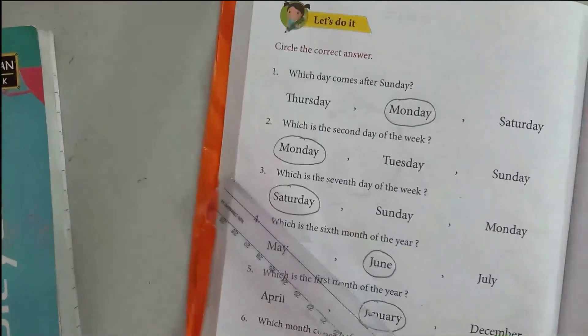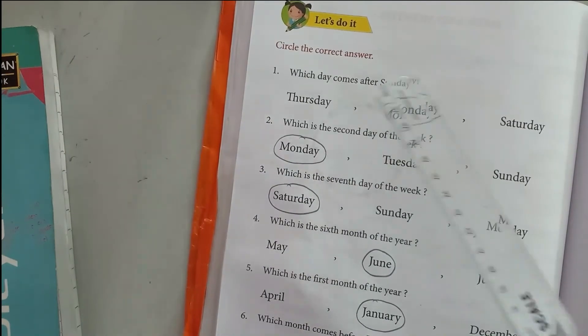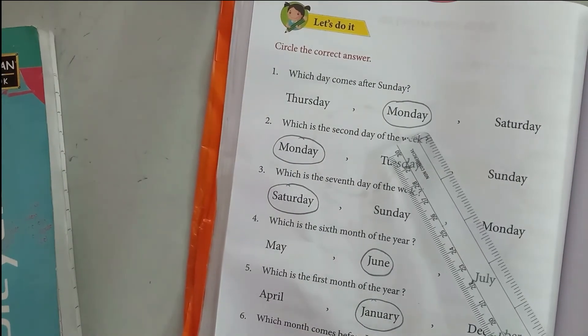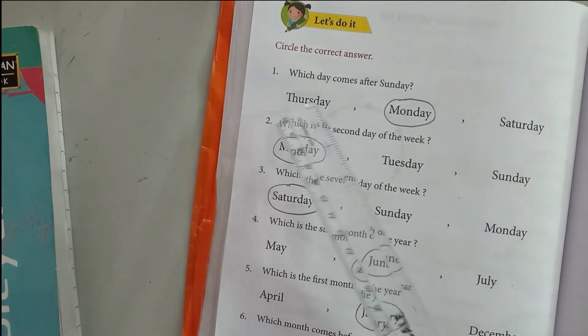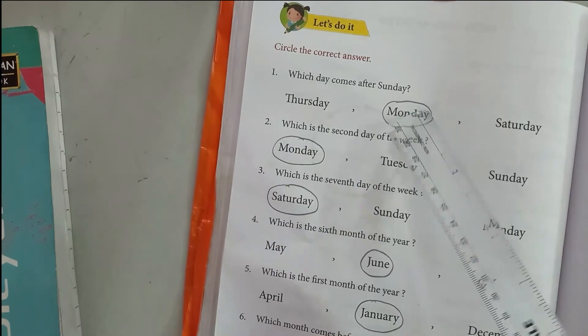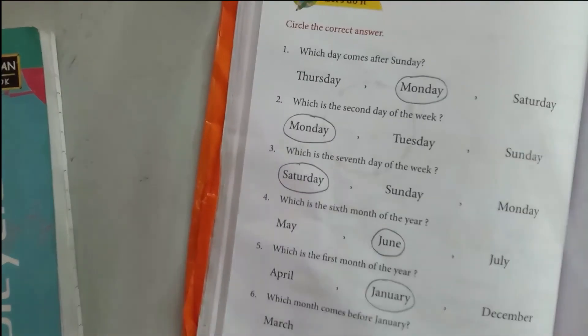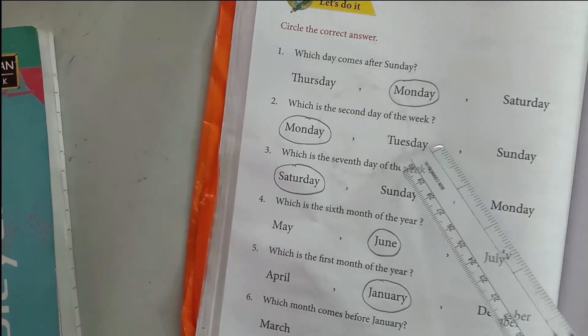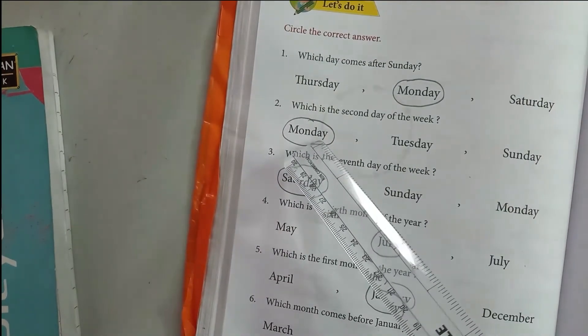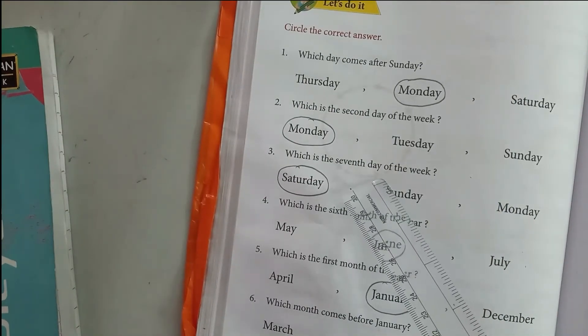Now let us do it. Circle the correct answer. Which day comes after Sunday? Monday. Which is the 2nd day of the week? Monday. Which is the 7th day of the week? Saturday. If we count Sunday, Monday, Tuesday, Wednesday, Thursday, Friday, Saturday is the 7th day.